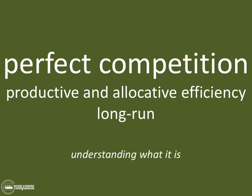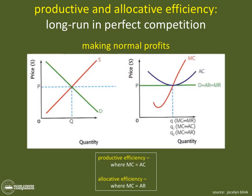Hey everybody, hope you're doing well. This is Brad Cartwright with Econ Course Companion. Today we're going to take a look at productive and allocative efficiency in the long run for the market of perfect competition. It's a very short video because in the long run of perfect competition it's all good — everything comes together. It is the maximum allocation of resources both productively and allocatively for firms and society.